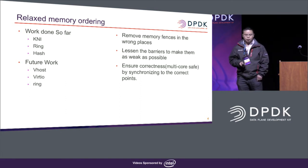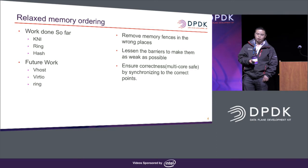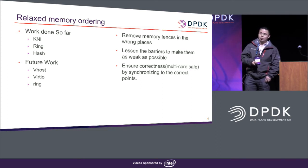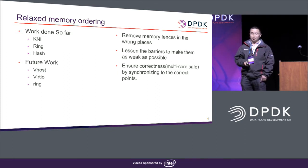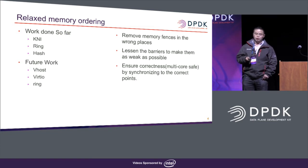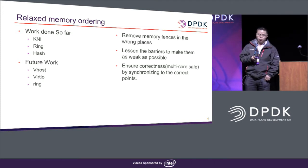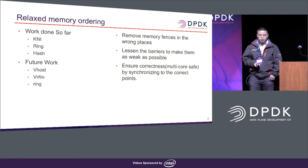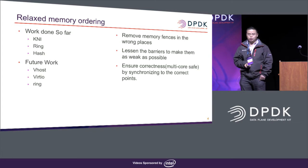In the future, we want to improve for vHost I/O and vRing implementation to also use less restrictive memory ordering. What we have done for this optimization involves three things: first, move or remove the memory fences from the wrong places; second, lessen the barriers to make them as weak as possible while correctness is still required; third, ensure correctness so it can run multi-core safe by synchronizing to correct points.